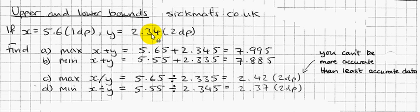And this one, y equals 2.34 to two decimal places, 2.345 is the upper bound or maximum, and the lower bound is 2.335. Because I'm going to the next column, which is the thousandths column, and I go five thousandths up from there and five thousandths down from there.